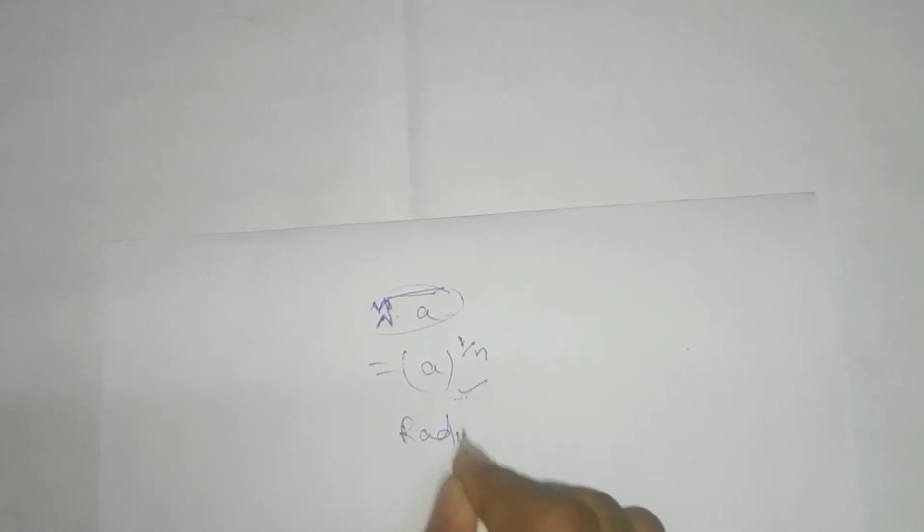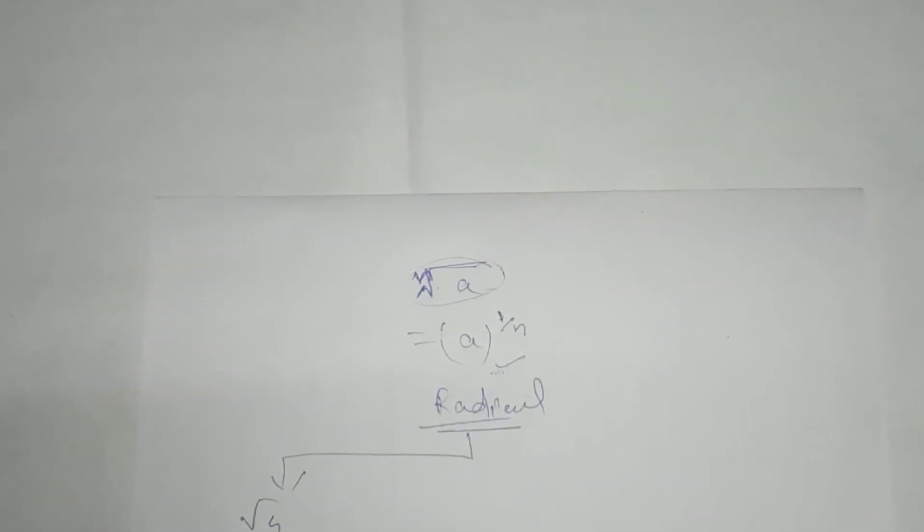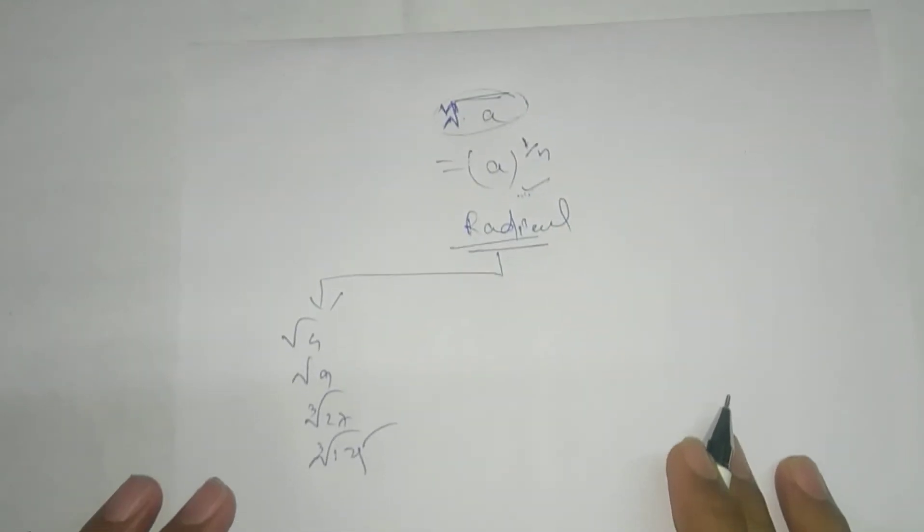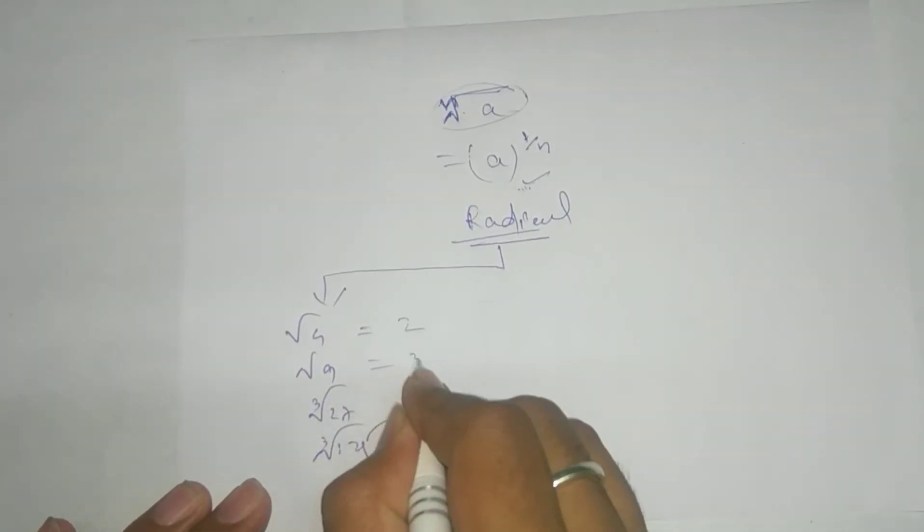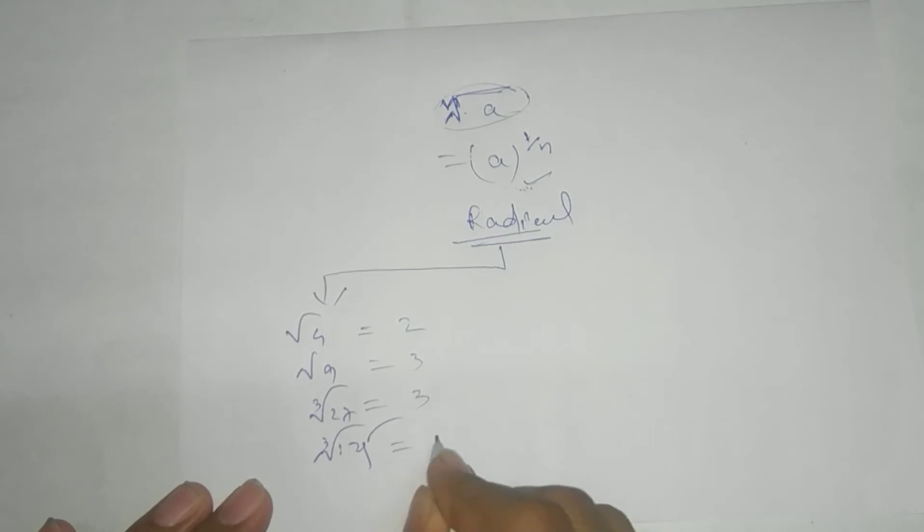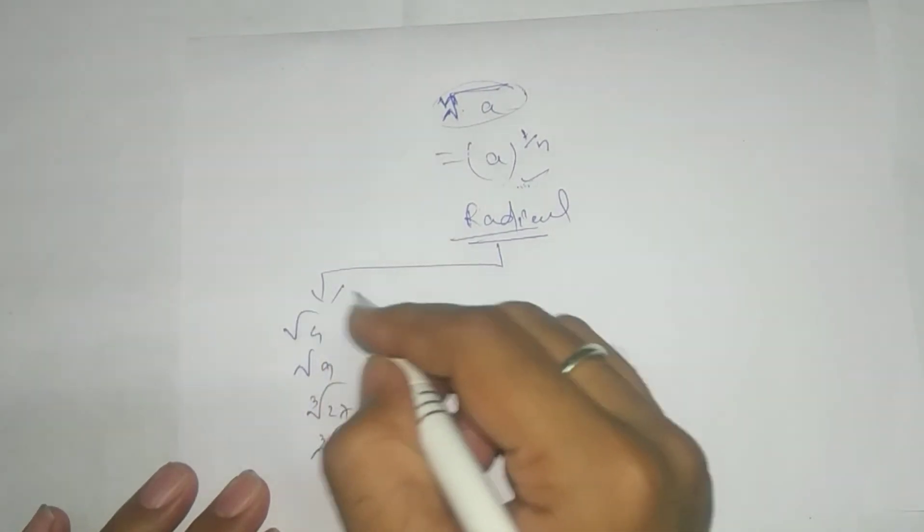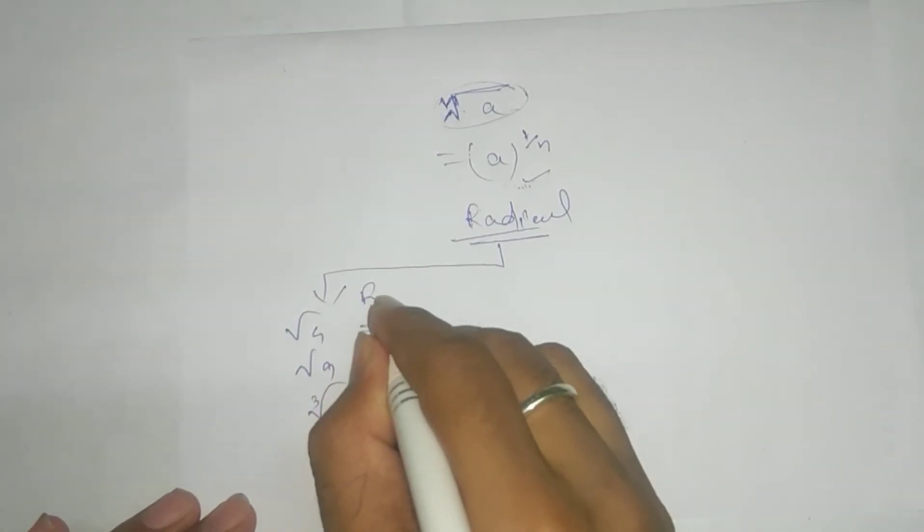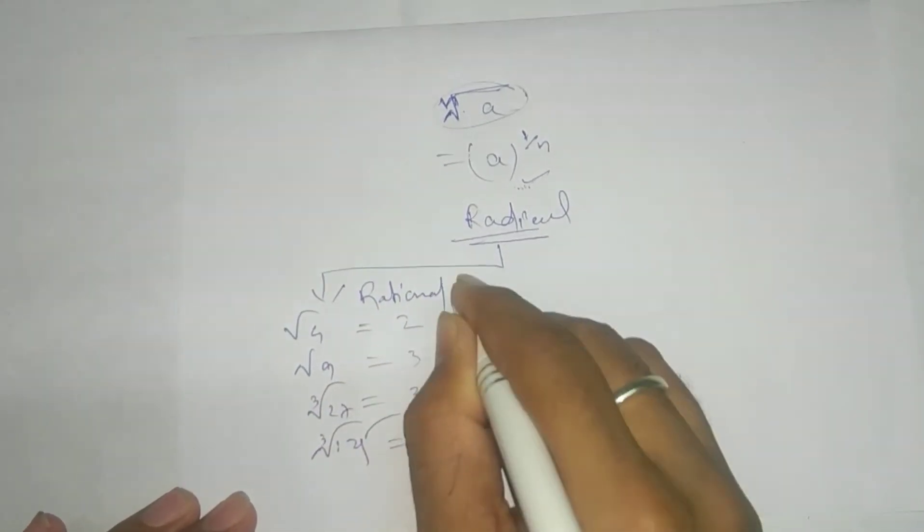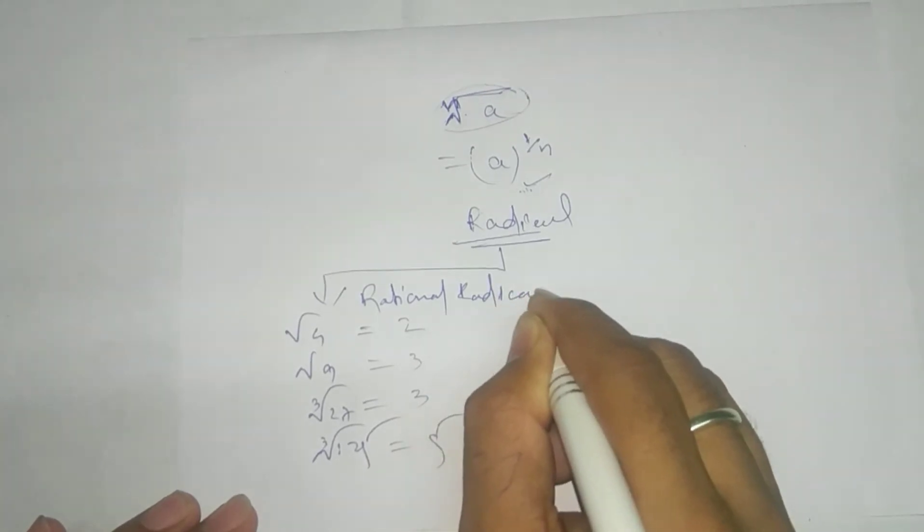Now, radical is two types. You have already seen right now that is root of 4, root of 9, cube root of 27, cube root of 125. If you have seen this one, you get rational number. This type of radical, we call rational radical.